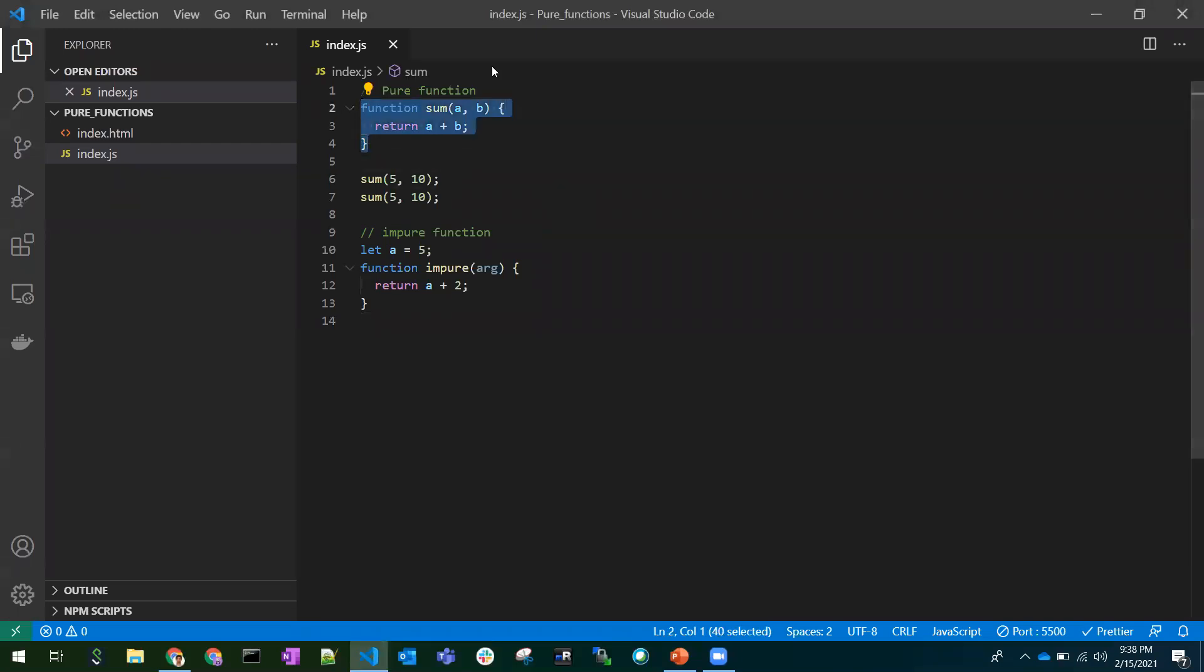This function is a pure function because it has two parameters, and whenever I send the same input, it produces the same output. That's all about a pure function—a simple pure function.